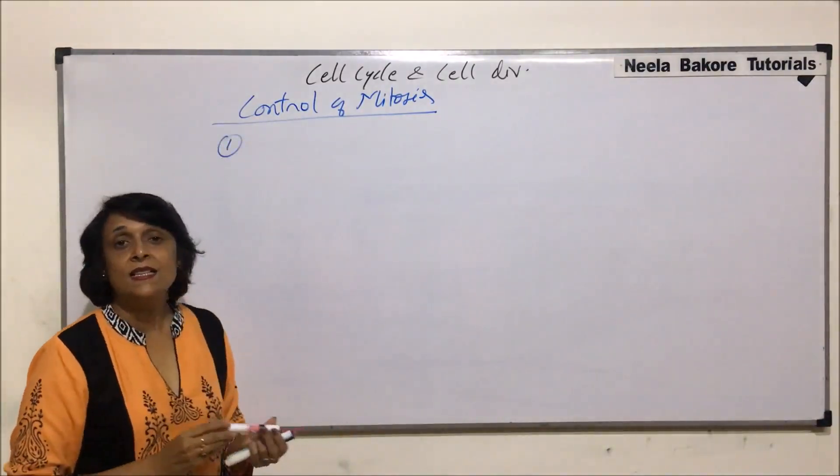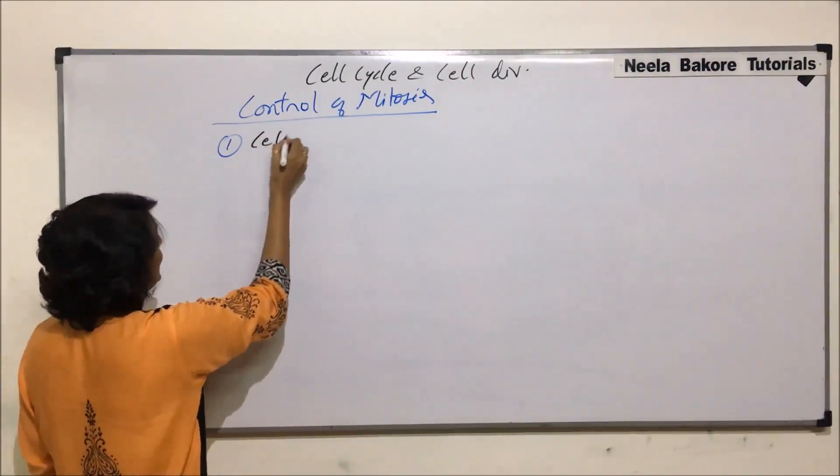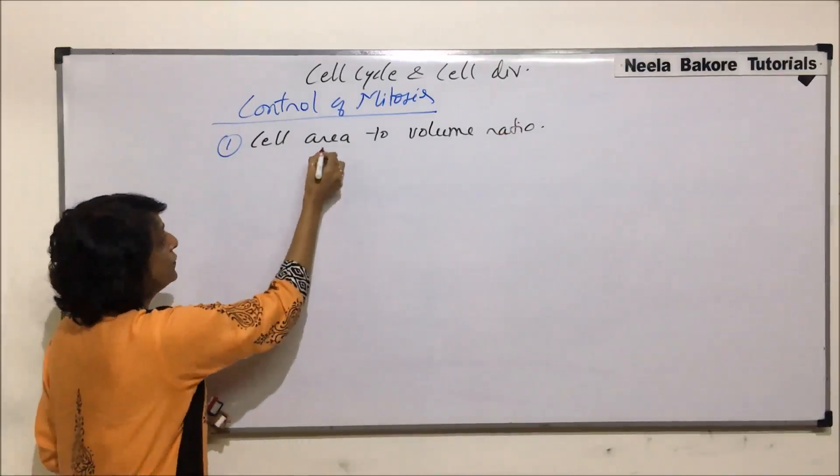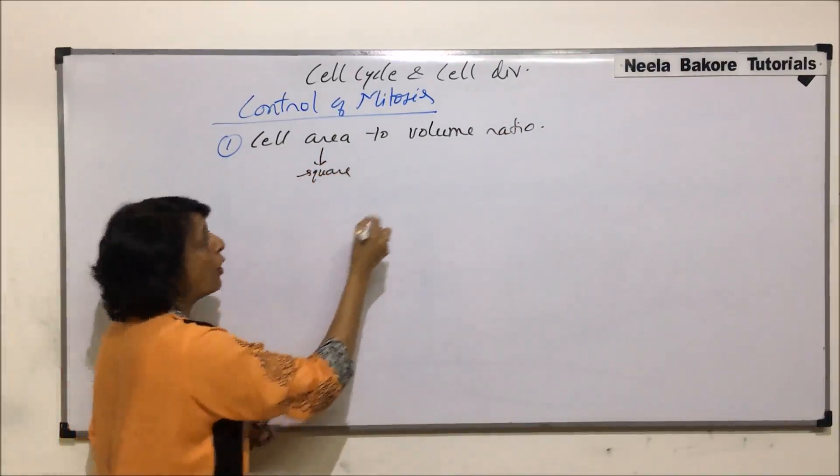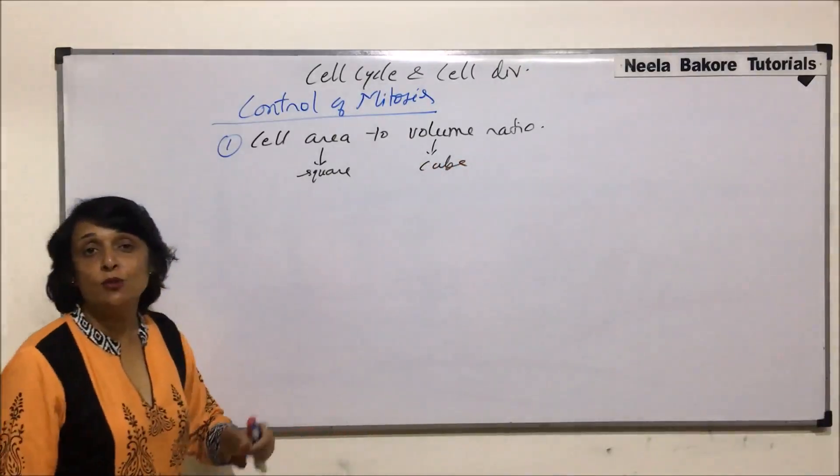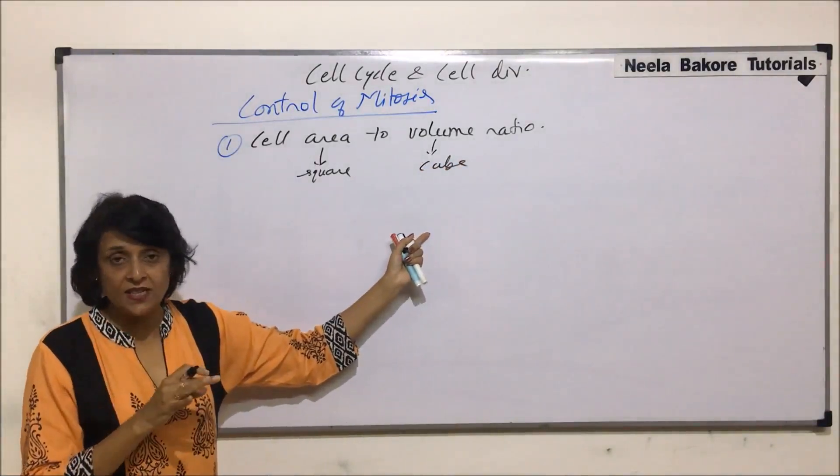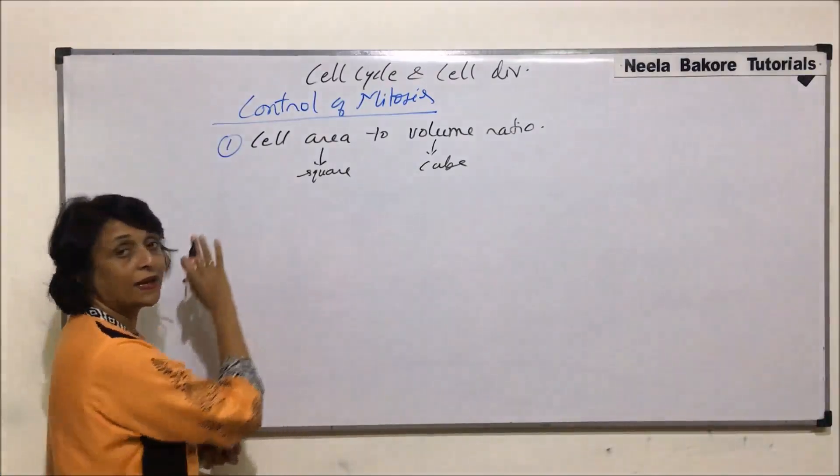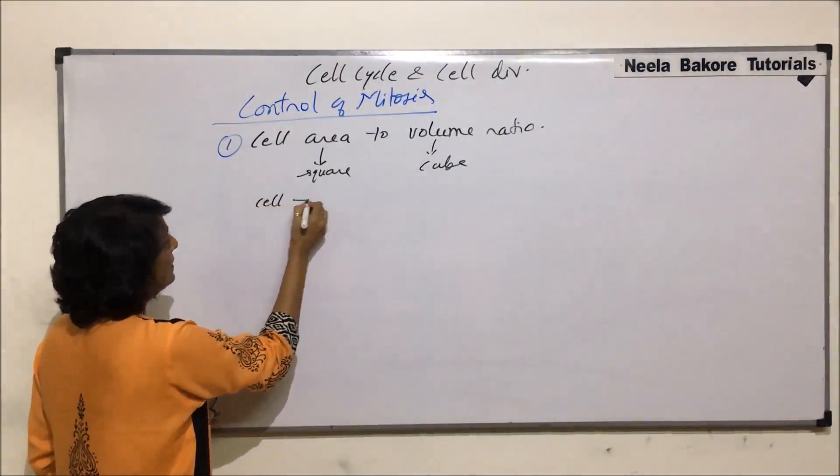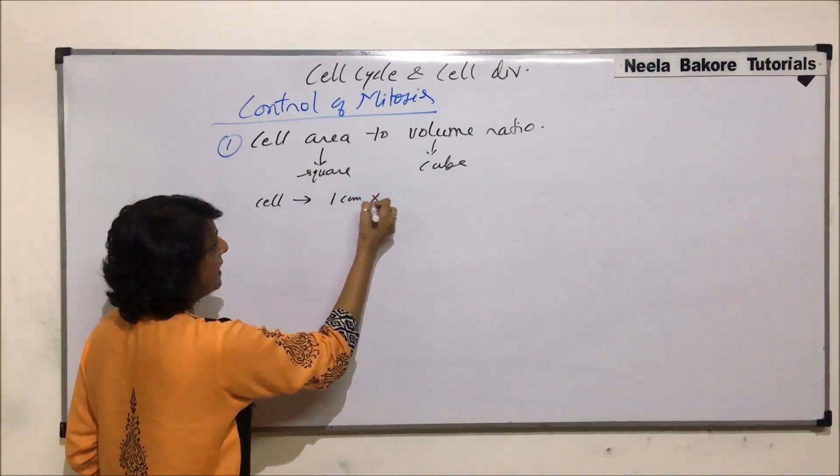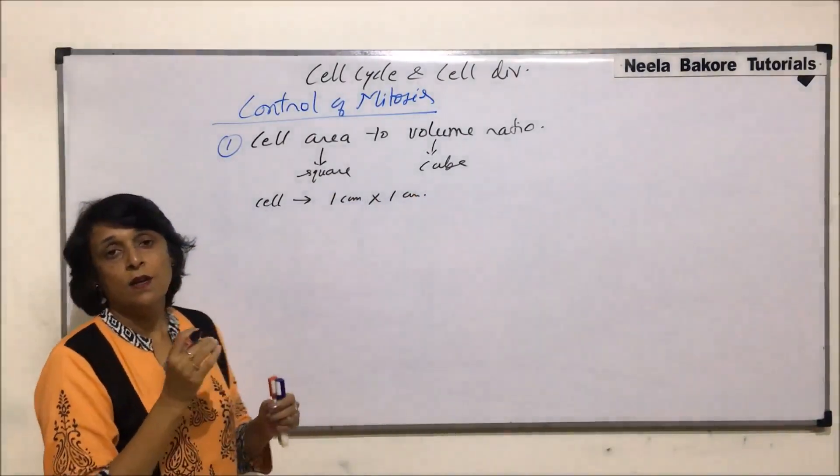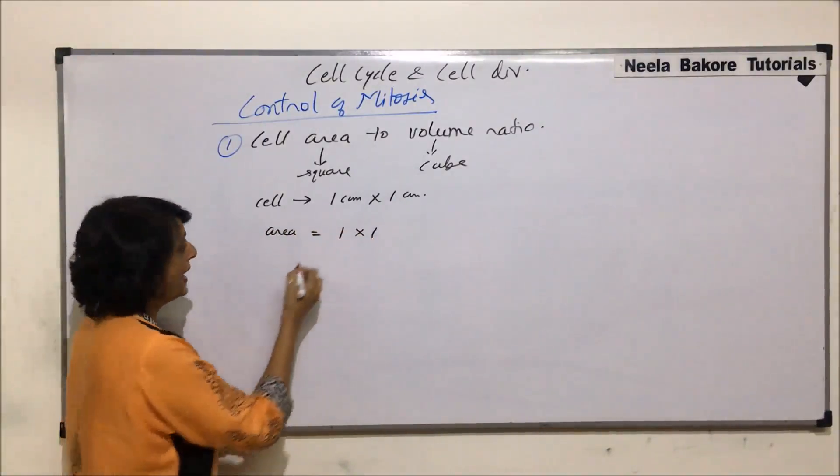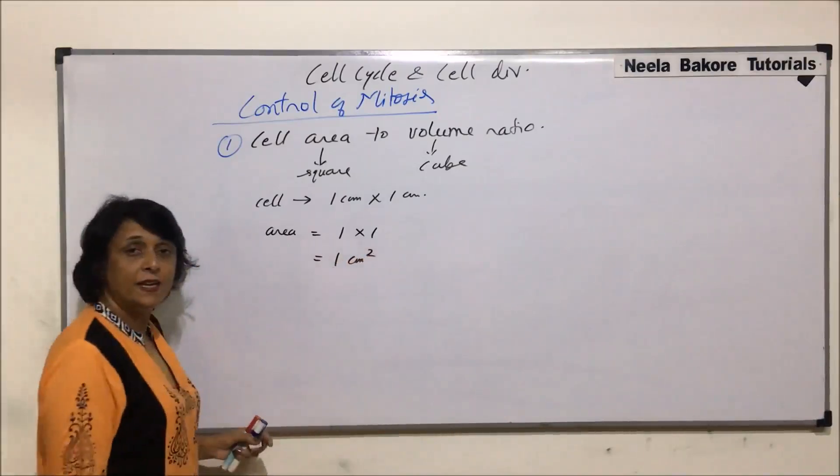The first one is known as cell surface area to volume ratio. An area of the cell is given in square whereas the volume is given in cube. We will take an example to understand what exactly is happening when the cell size changes or this ratio changes and how does that ratio result in cell division, that is mitotic division. Say we take a cell which is in size 1 centimeter by 1 centimeter.